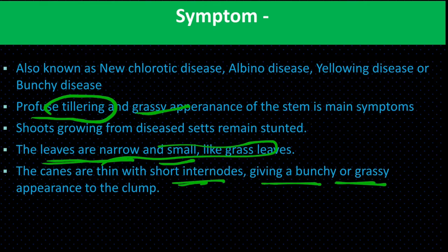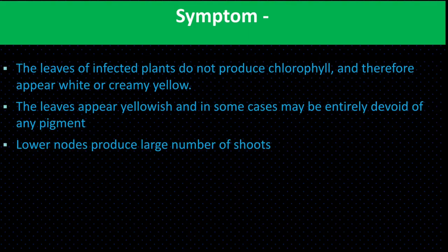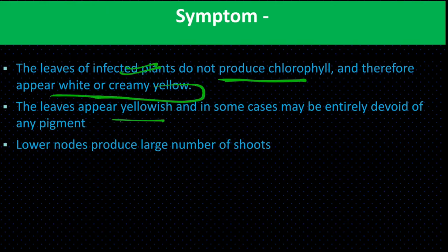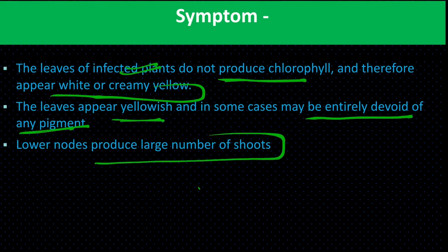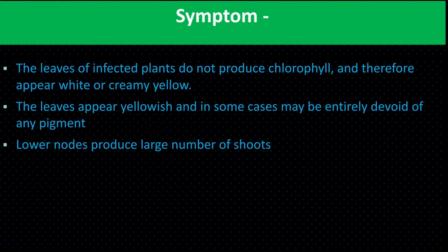The disease is also known as chlorotic disease, albino disease, yellow wing disease, and bunchy disease. If infected plants are used as seed material, the resulting plants are stunted with poor growth and development. The leaves of infected plants do not produce chlorophyll and therefore appear white or creamy yellow. Lower nodes produce a large number of tillers, giving the plant a bunchy or grassy appearance.